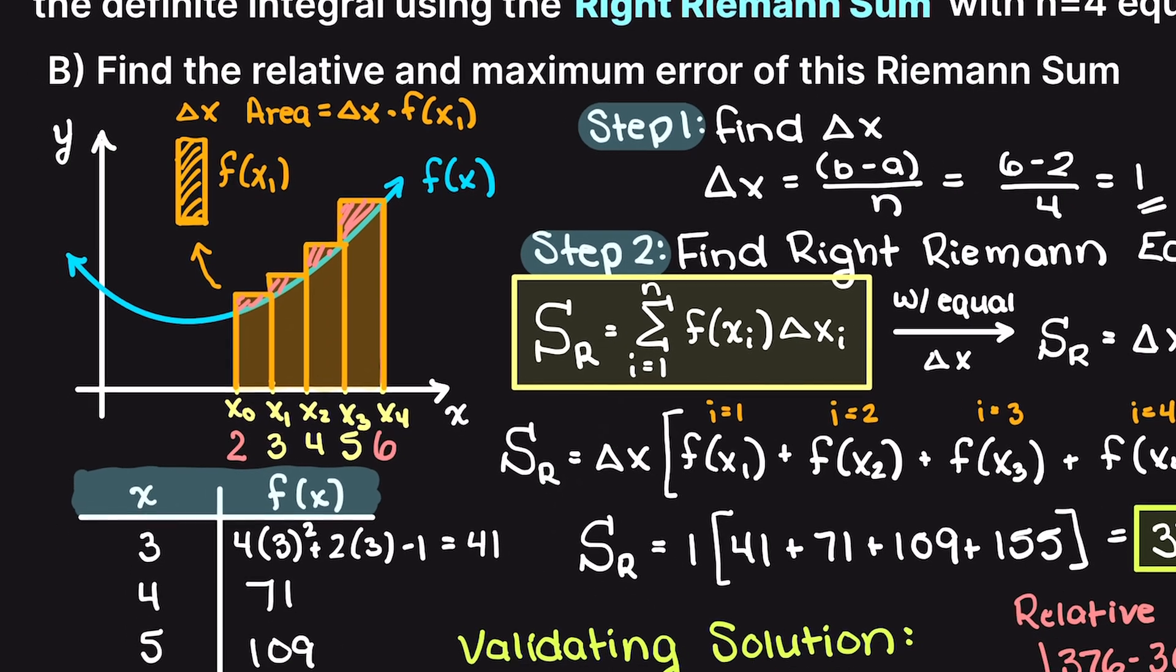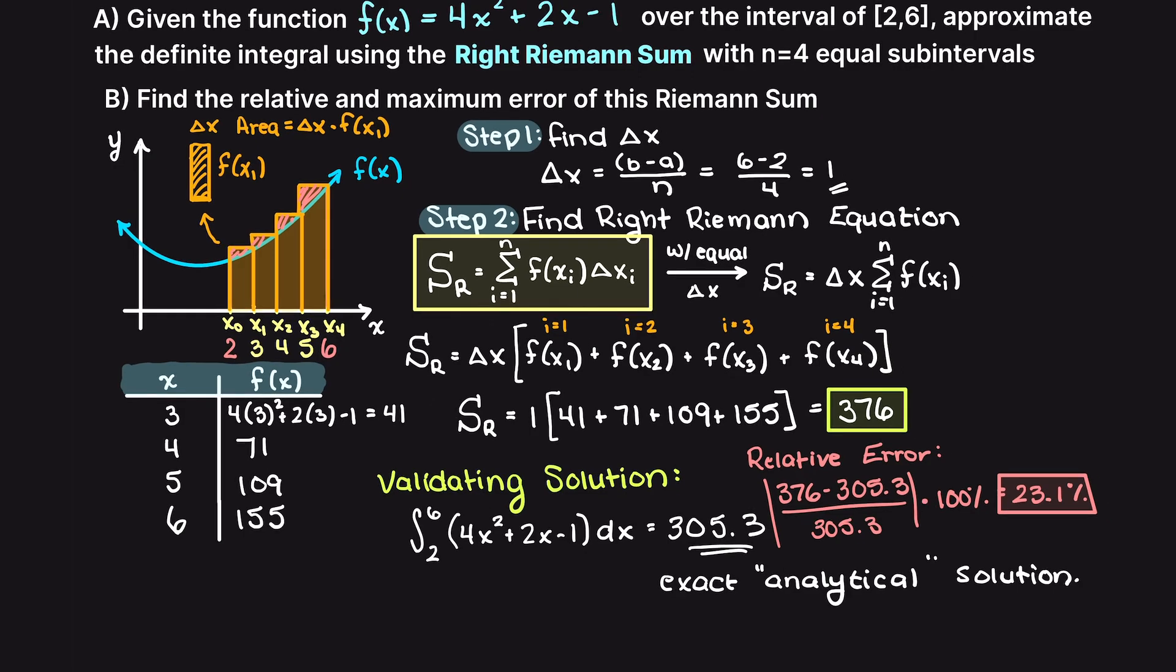So, if on a test you were asked how you might improve this error, you could say that increasing our n value, or increasing our subintervals, will reduce our error proportionally.